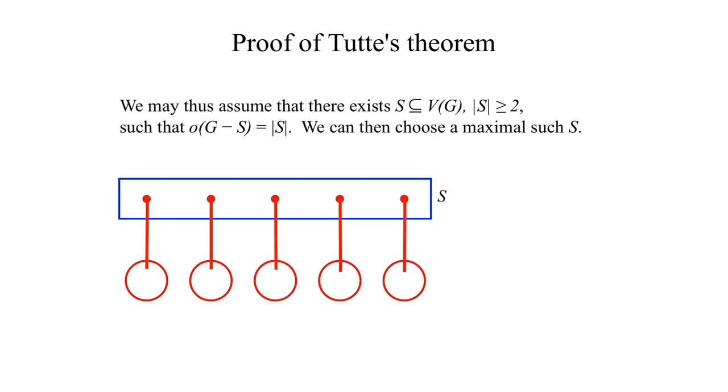We are then left with the remains of each odd component, each now with an even number of vertices. Thus, consider now the remains of an odd component K, from which a vertex A has been removed.